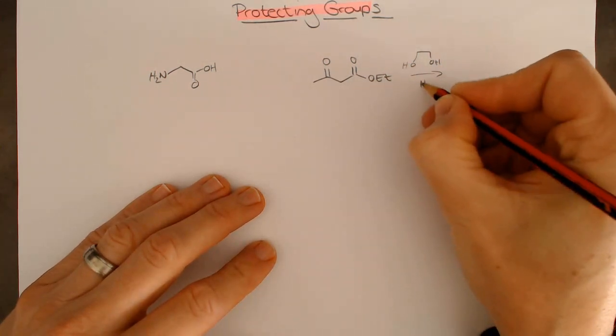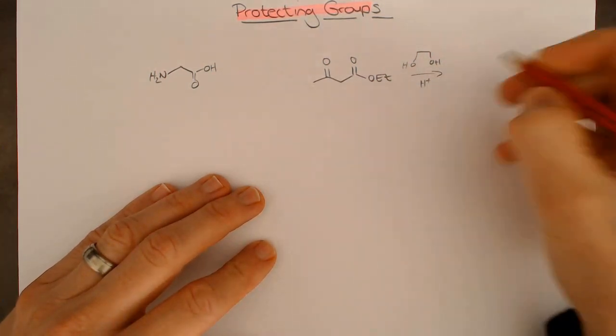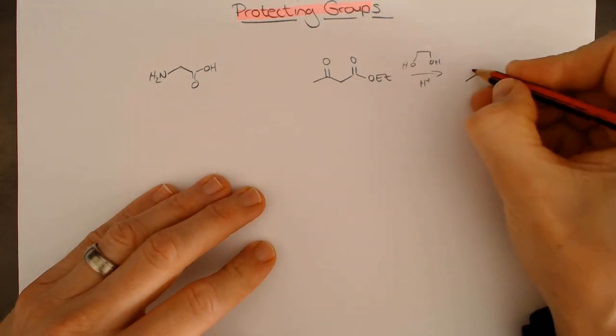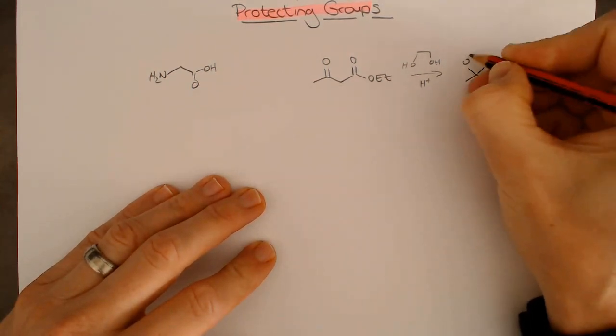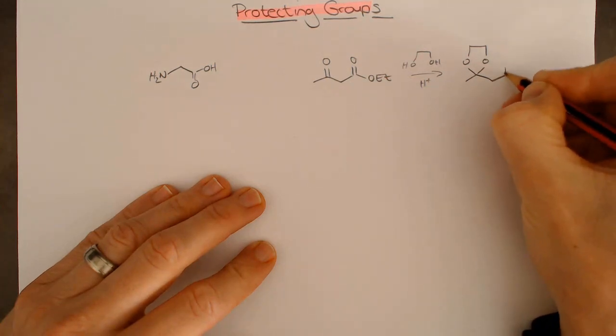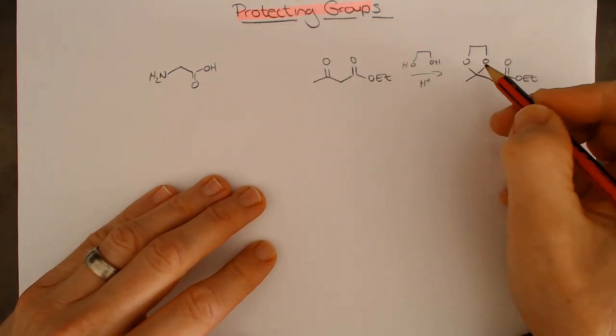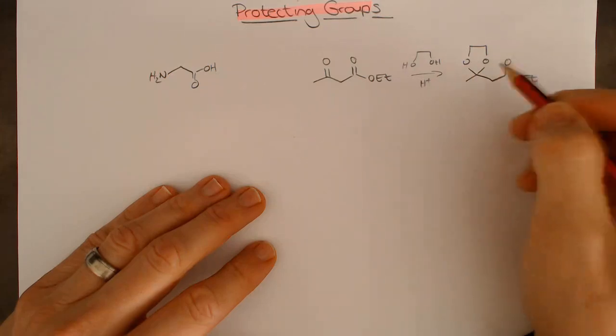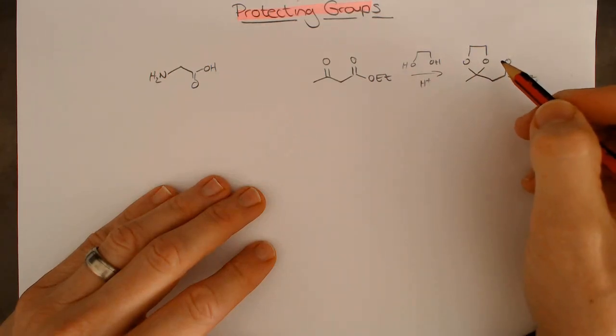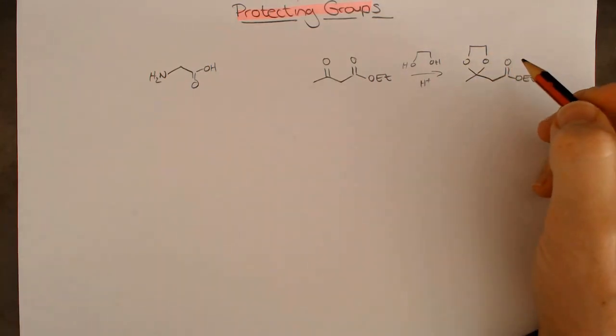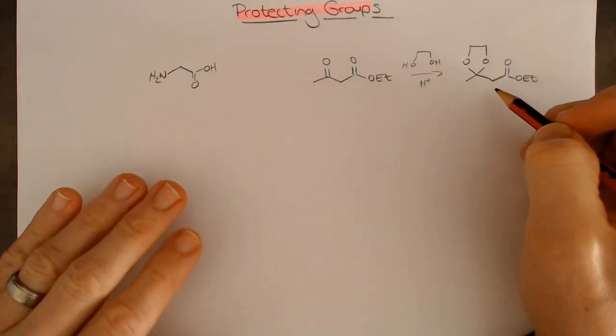The one you should all be familiar with is to form a ketal. It's an acid-catalyzed ketal formation, and we get this cyclic acetal or ketal. This is just one example, a cyclic version. It's nice because these tend to be a lot more stable.